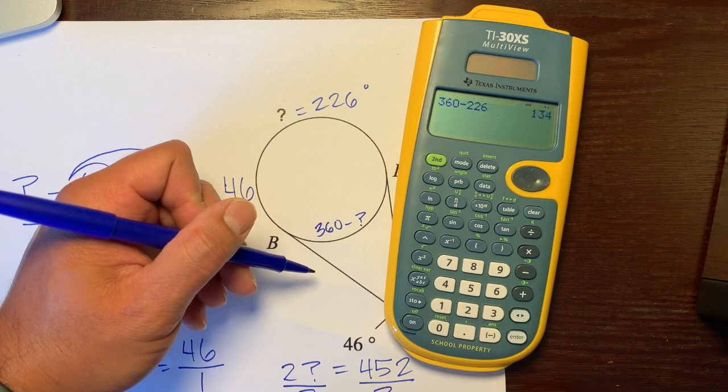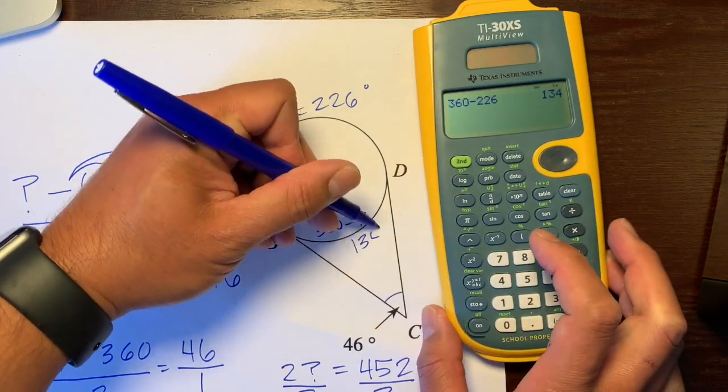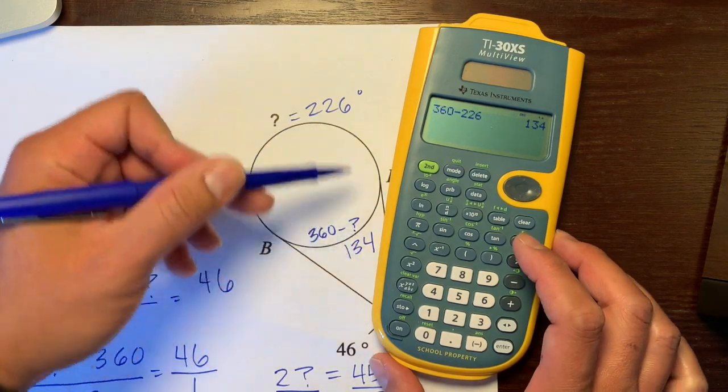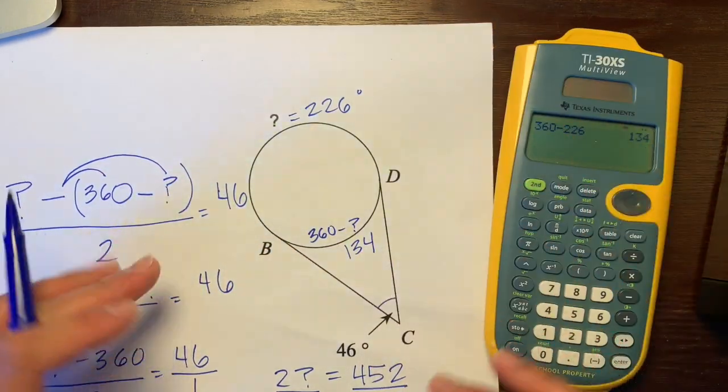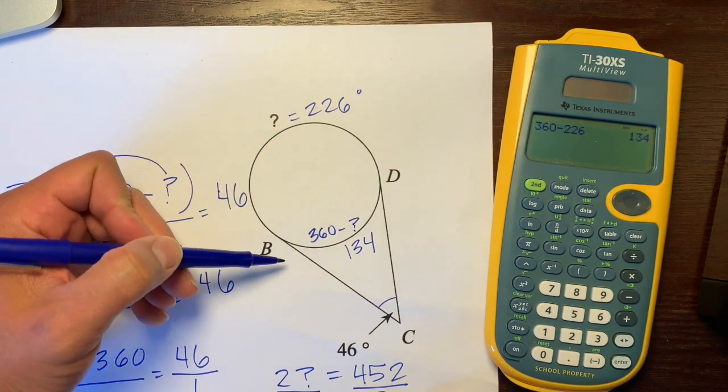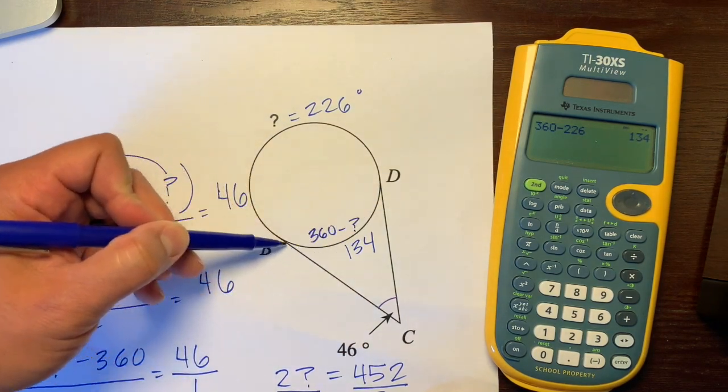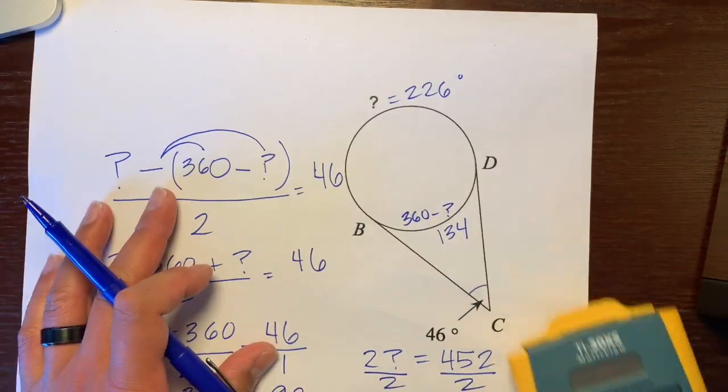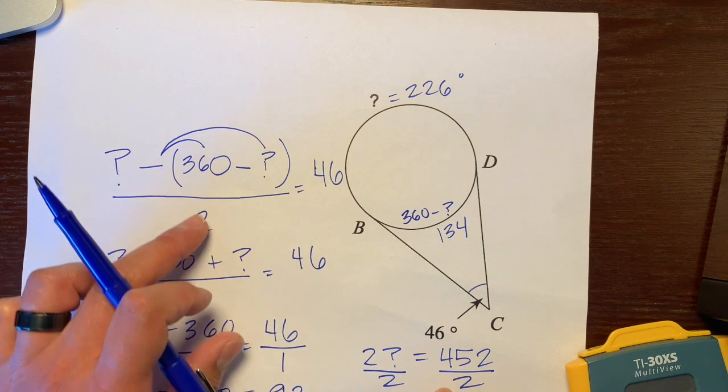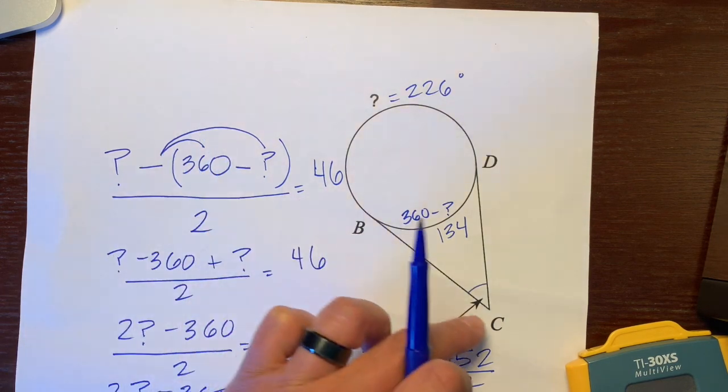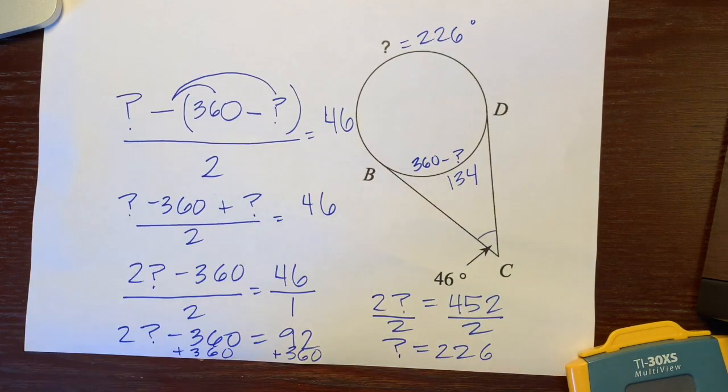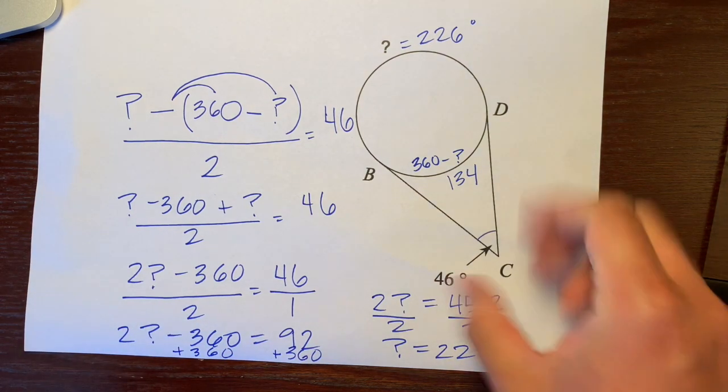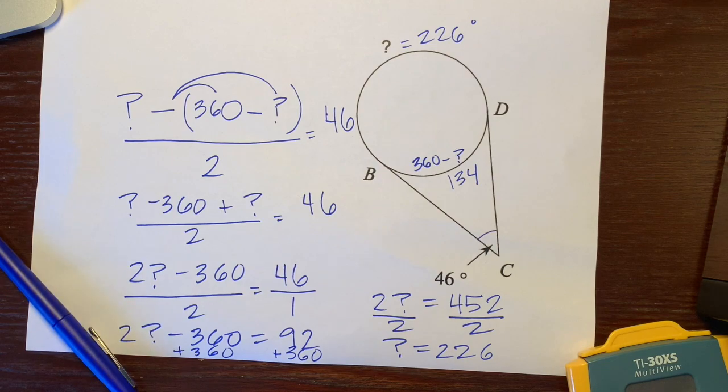And if you want to know what this arc is, we take 360 minus 226. So this arc is 134 degrees. Both these arcs add up to 360. Just take this arc and subtract it from 360 to get information about this arc, then plug it into that formula. The far arc minus the near arc divided by 2 equals the measure of the angle on the outside. I hope this helps. That's what you do with an ice cream cone. I'm Mr. Q. Have a great day.